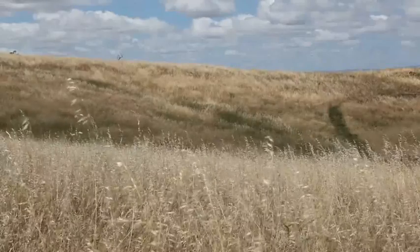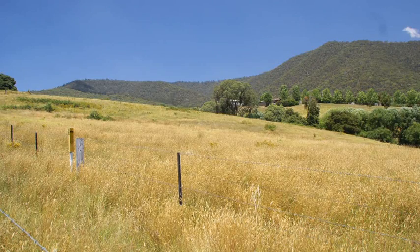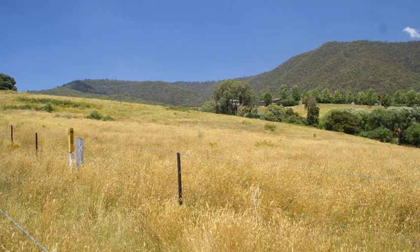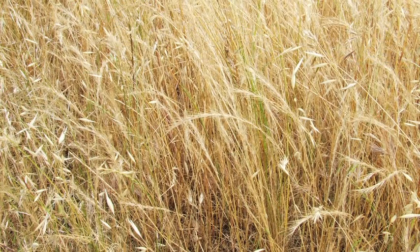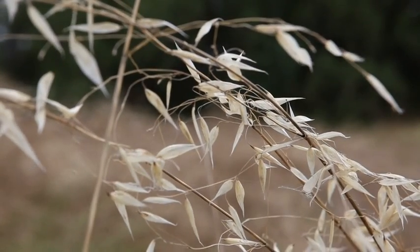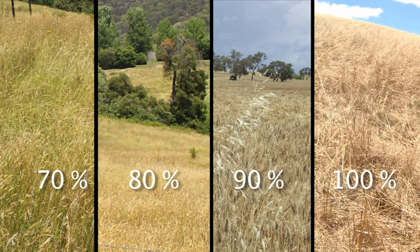Now let's look at how we determine grass at 80 and 90 percent cured. Grass at 80 percent has finished shedding all its seed, and there may be some green present in patches in the field or on the bottom third of the stalks. Grass at 90 percent has finished dropping seed and is usually either completely dry or has the odd individual green stalk — it is not fragile like grass at 100 percent. Here are some photos of grasslands from 70 to 100 percent cured.